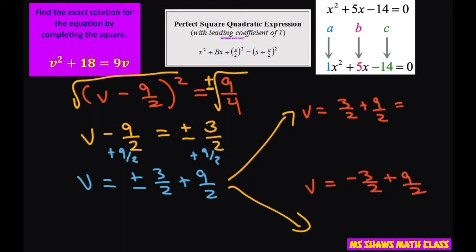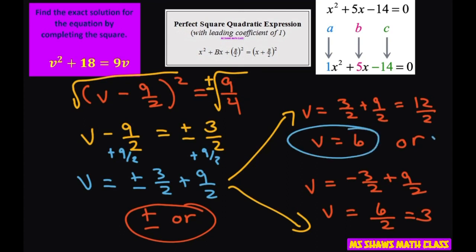So this one's going to give you 12 halves. That gives you 6. So v equals 6, or remember plus or minus, that's what that means. Negative 3 plus 9 is 6 and that's going to give you 6 halves which equals 3. So we have v equals 6 or v equals 3. V equals 6 or v equals 3. And that's it. Thank you. Have a nice day. Bye-bye.